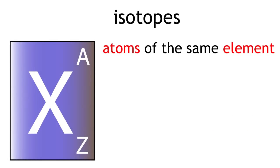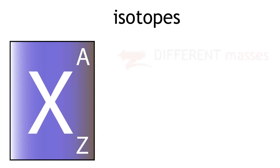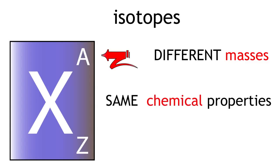So isotopes are atoms of the same element with the same number of protons but a different number of neutrons. They have different masses but their chemical properties are exactly the same.